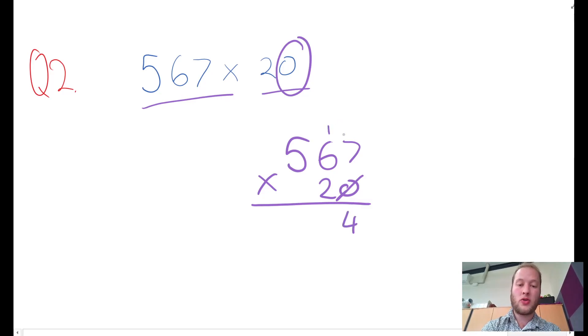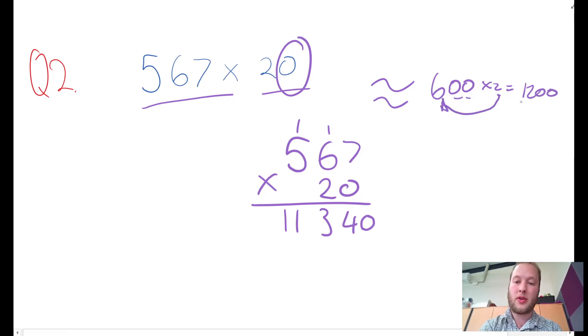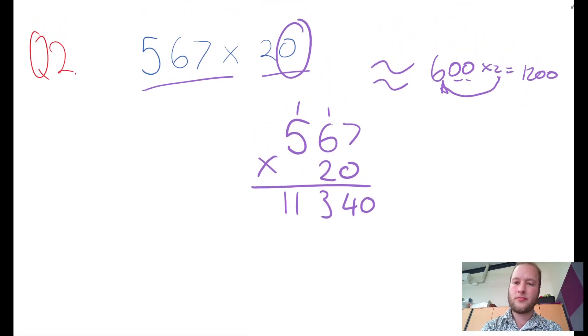Two times 7 is 14. Two times 6 is 12 plus 1 is 13. Two times 5 is 10 plus 1 is 11. Now my answer is 1134, and then I need to put the zero back in, so it's 11,340. Let's do a rough estimate: 567 is close enough to 600 times 2, which would be 1200. Two times 6 is 12, add my two zeros.